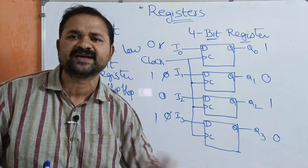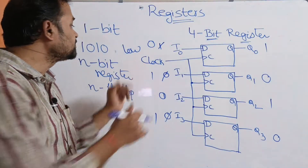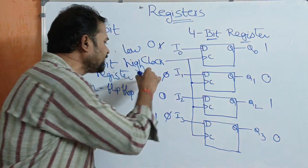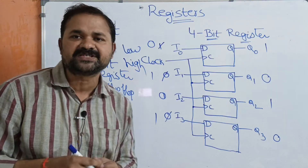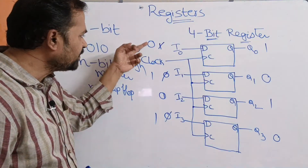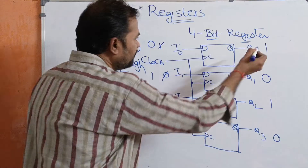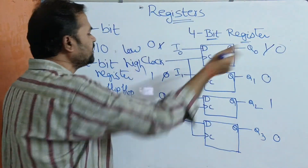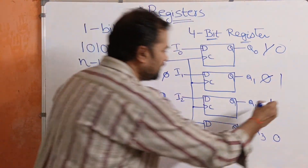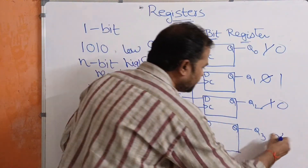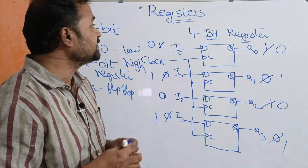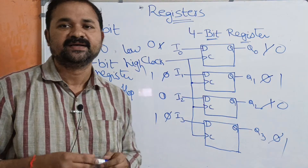Now assume that the clock input is high again. That means we have applied the clock pulse. So the outputs will now reflect the current inputs: the input is 0, so output is 0; input is 1, output is 1; input is 0, output is 0; input is 1, output is 1. So we get 0, 1, 0, 1 as the output. This concludes the discussion about registers.